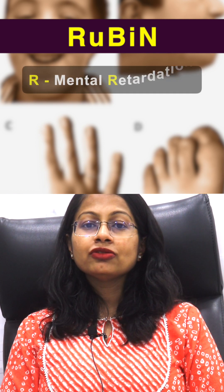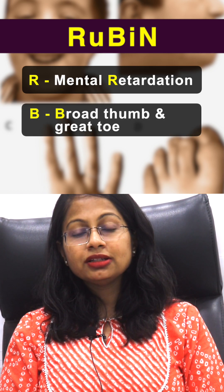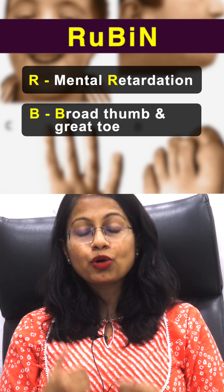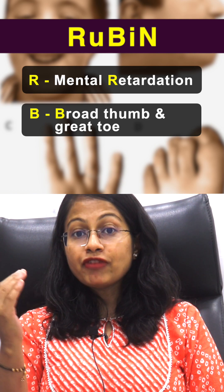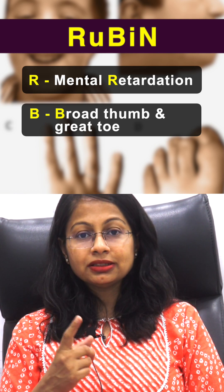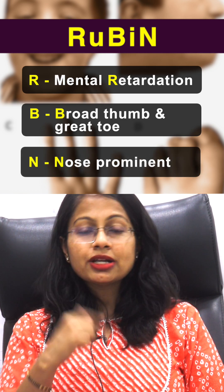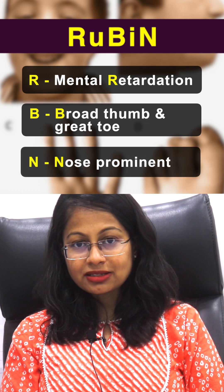R stands for mental retardation, which is present in this child. B stands for broad thumb and broad great toe, with valgus deviation of these fingers and toes. And N stands for the prominent nose that is present.